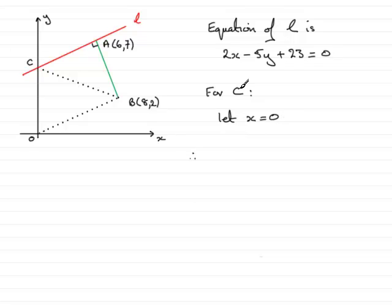what we have is two times zero, which is zero, and then we end up with minus 5y plus 23 equals zero. So if we add 5y to both sides, we would have 5y equals 23,